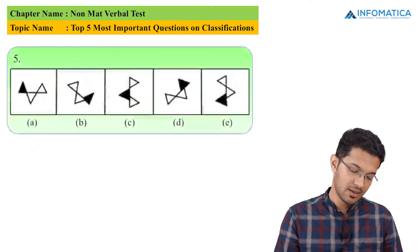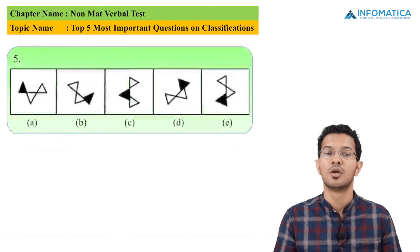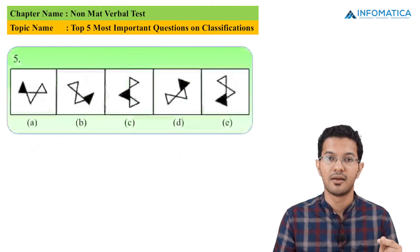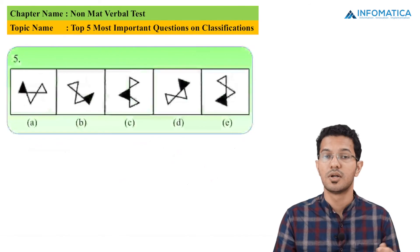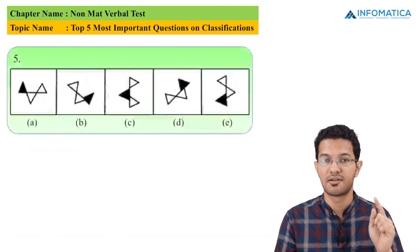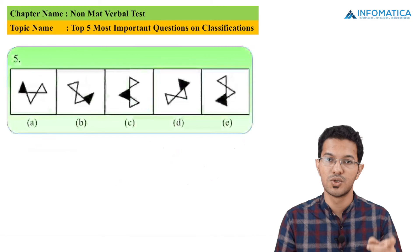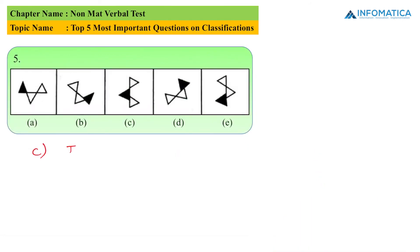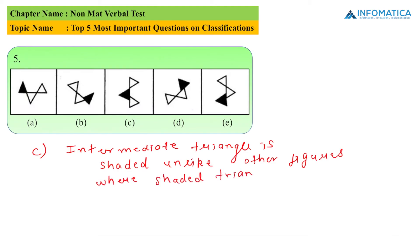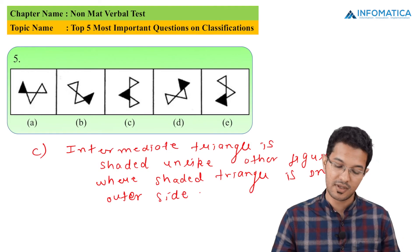Now let us look at the next MCQ. In this I have three triangles which are intertwined with each other. Looking at the shaded figures, options A, B, D, and E follow the same pattern. So the answer to this question will be option C. The reason is that the intermediate triangle is shaded, unlike other figures where the shaded triangle is on the outer side.